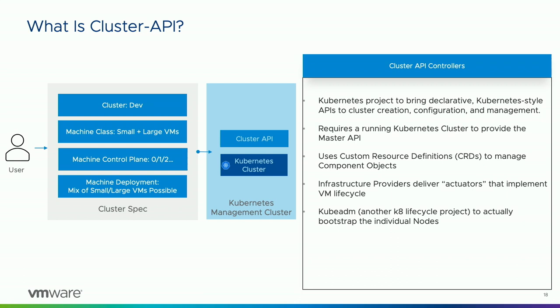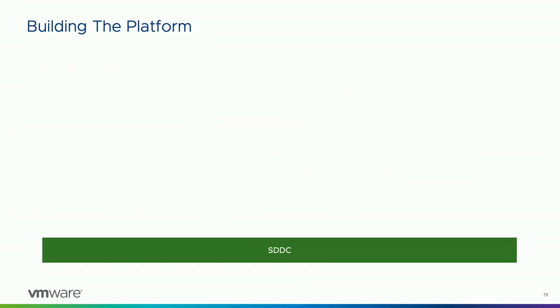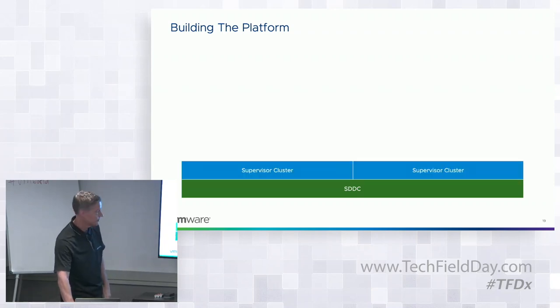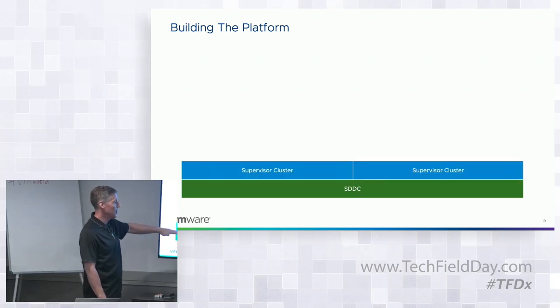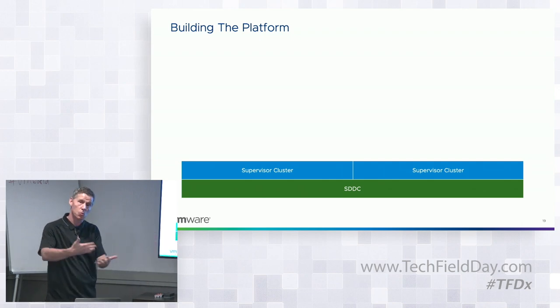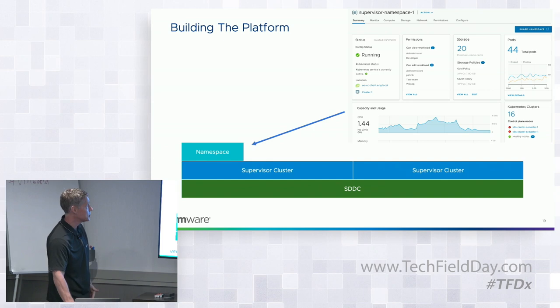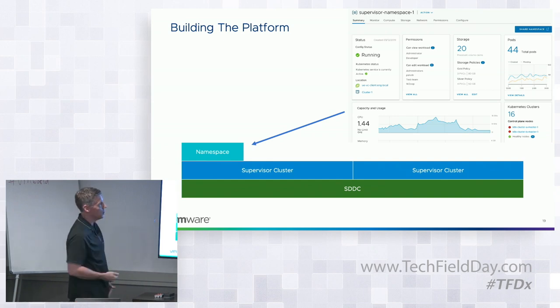The provider knows that in order to instantiate a cluster with a certain number of machines configured a certain way, it has to create VMs underneath and provide that configuration. This is an open source approach, and across VMware all of our Kubernetes offerings are standardizing on using cluster API as the means of instantiating and doing lifecycle management of Kubernetes clusters. Looking at the project-specific architecture, we have the SDDC underneath, and we're creating one or more supervisor clusters with a one-to-one mapping between an ESXi cluster and a supervisor cluster.